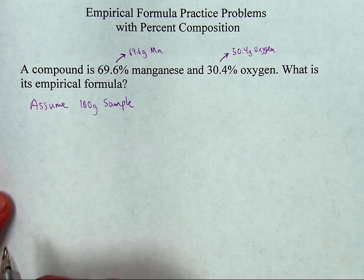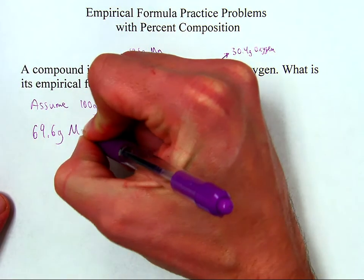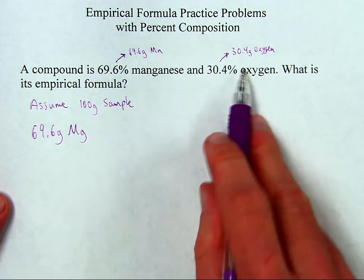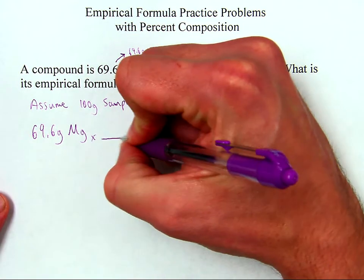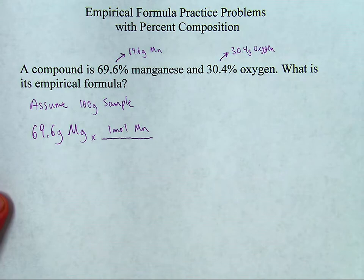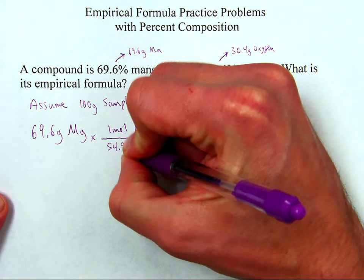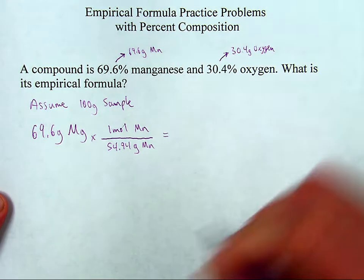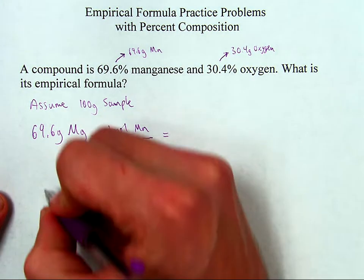Alright, so that means you take your 69.6 grams of manganese and convert to moles, and convert this to moles, and then find a ratio between the two moles. So here we go, converting to moles. One mole of manganese has a molar mass of approximately 54.94 grams. Okay, before doing the actual numbers, let me set up the other one also.